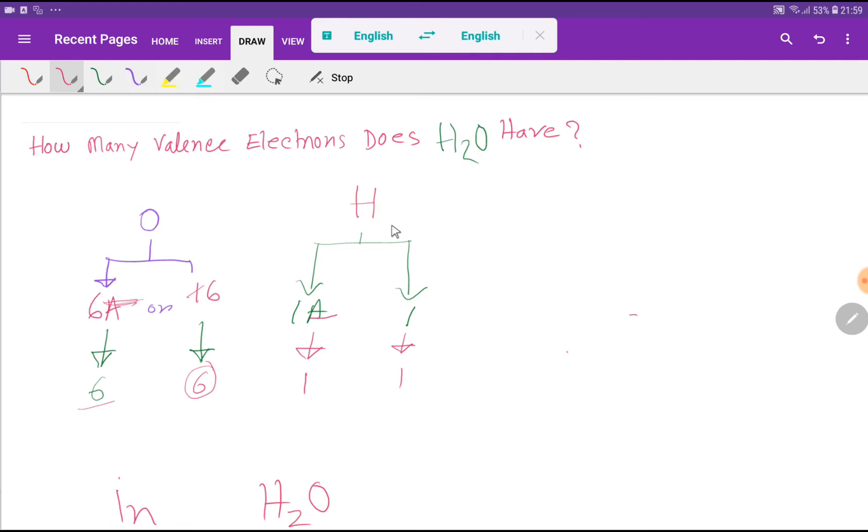Hydrogen is an element of group 1A, that is why it will have one valence electron. You deduct the A, or hydrogen is an element of group 1, that is why it will have one valence electron.